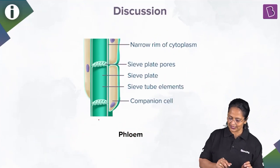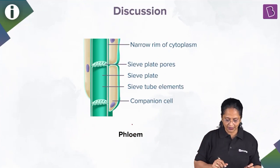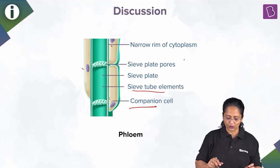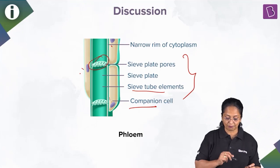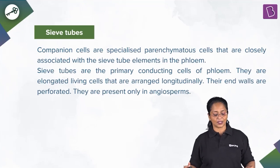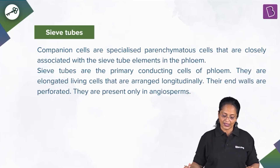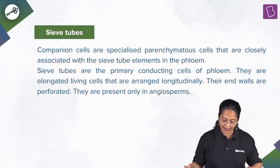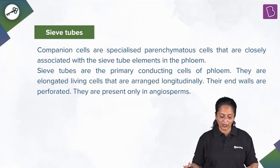Here is a picture showing a longitudinal section of the phloem. This is the companion cell — the nucleated one. And this tube-like structure is the sieve tube, and this is the sieve plate. Companion cells are specialized parenchyma cells closely associated with sieve tube elements in phloem. Sieve tubes are the primary conducting cells of phloem — elongated living cells arranged longitudinally with perforated end walls.